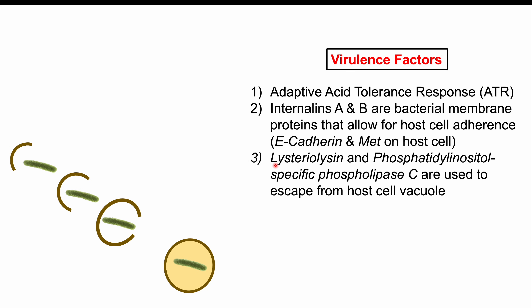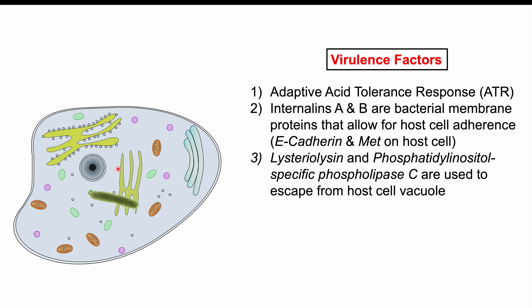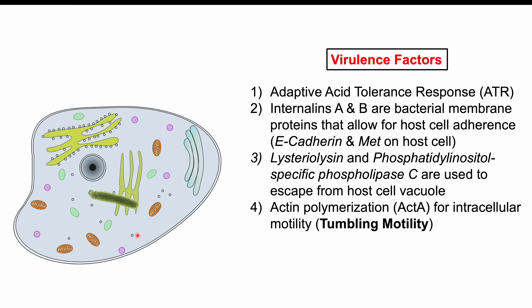Listeria has tools to escape the host cell vacuole: listeriolysin and phosphatidylinositol-specific phospholipase C. Listeriolysin helps it burrow a hole through the vacuole membrane, and phospholipase C helps it break down phospholipids in cell membranes. Once it escapes the vacuole, it enters the cytoplasm of the host cell and can move through it.